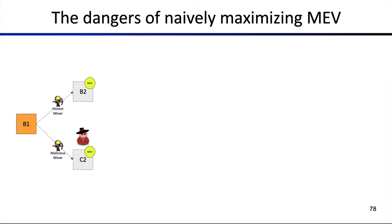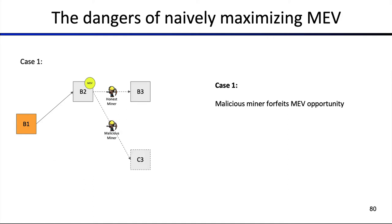The dangers of naively maximizing MEV — basically extracting MEV — are the following. Let's assume we have a block B1. There's an honest miner who mines block B2, and there's an MEV opportunity in this block. There might also be a malicious miner who would like to extract this MEV opportunity. The honest miner would like to continue mining on B3, but this means the malicious miner would forfeit the previous MEV opportunity. Why would the adversary give this MEV opportunity to the honest miner? It doesn't make much financial sense — it's not a rational thing to do.